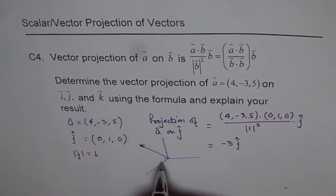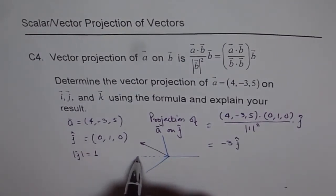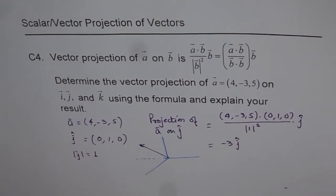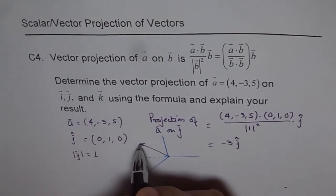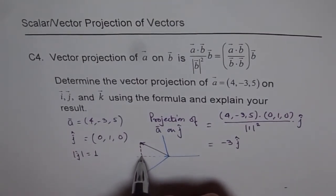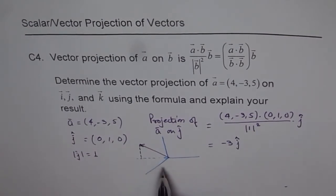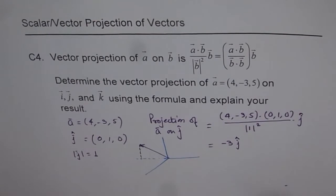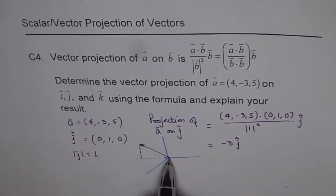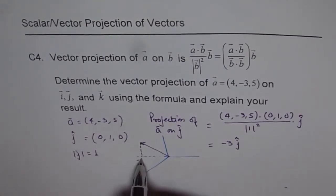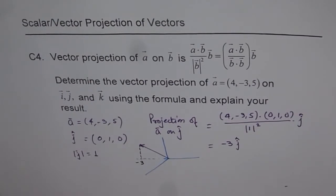Now, this vector, if you want to project it on Y axis, for example, then what do we do? We just draw a projection from the tip of the vector to Y axis. And that is going to be the Y component. Here, this Y component, which is -3.